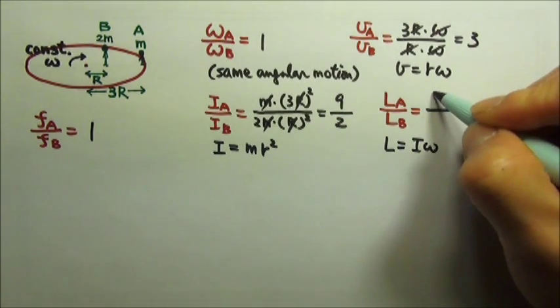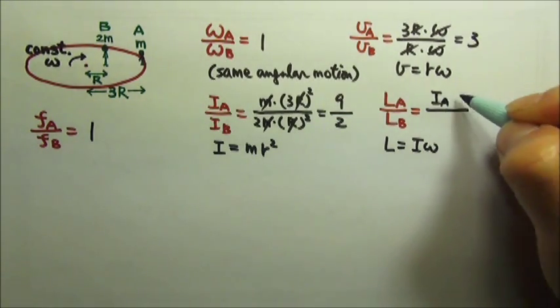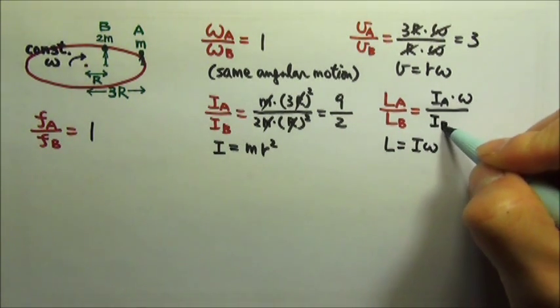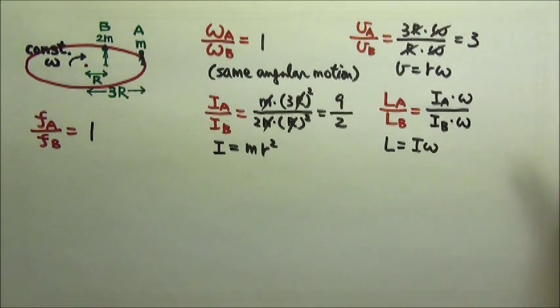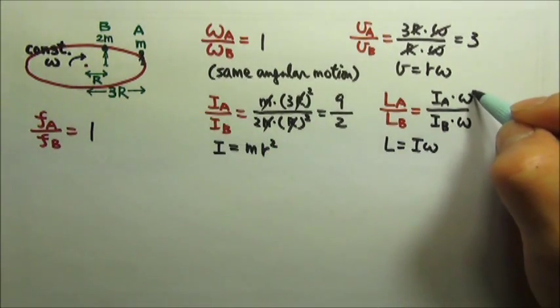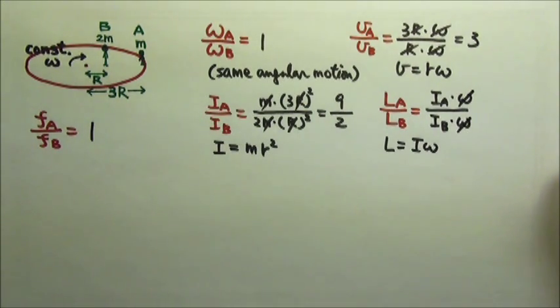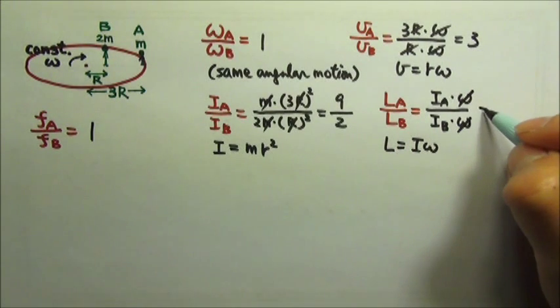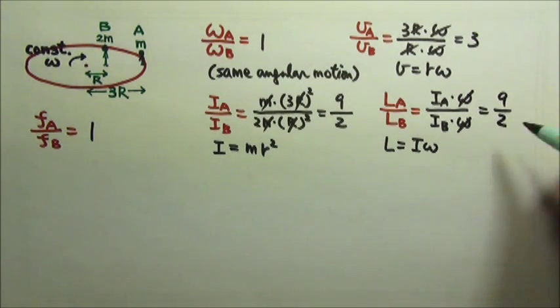So this is the I of person A times omega, divided by the I of person B times omega. Same omega for both people, so the omega will cancel, and this we already found - it is 9 divided by 2.